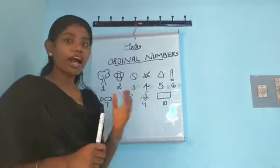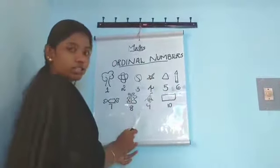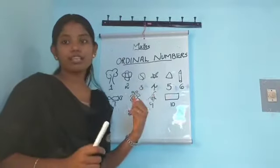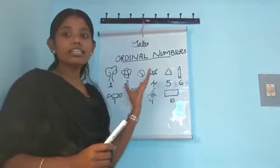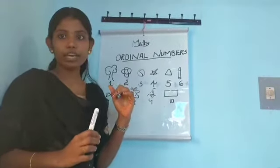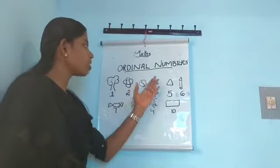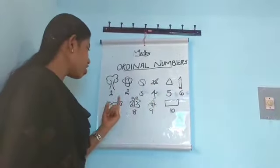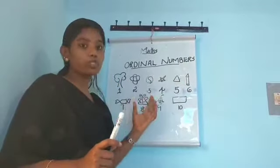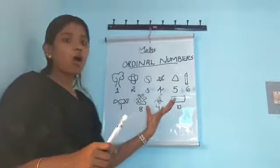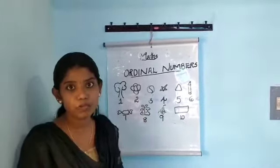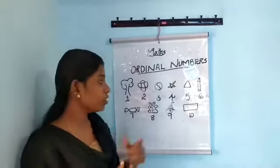I have drawn some objects on the board and written numbers below. I will be asking questions and you have to tell me what is the position of each object placed on the board. For example, you would say the object is placed in the third position.